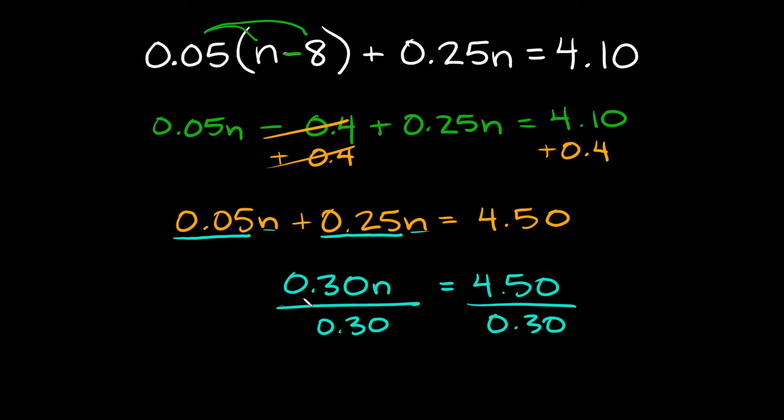The 0.30 on the top and the bottom those cancel out so we're just going to be left with n on this side of the equation and that's going to be equal to 4.50 divided by 0.30 which is equal to 15. So then your answer right here is n is equal to 15.